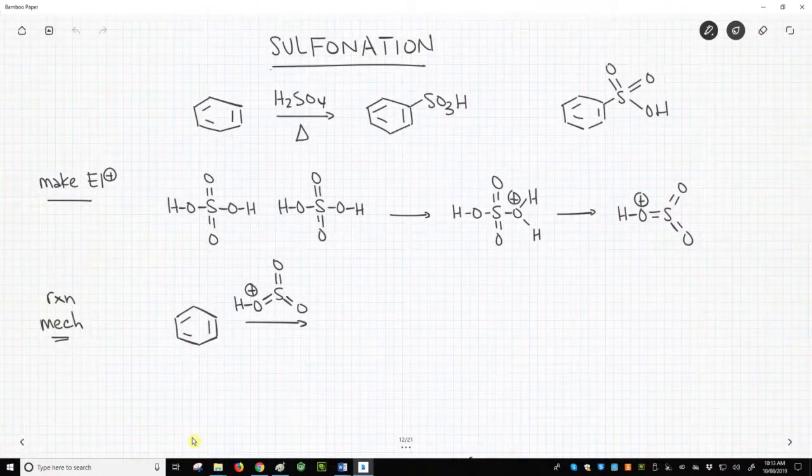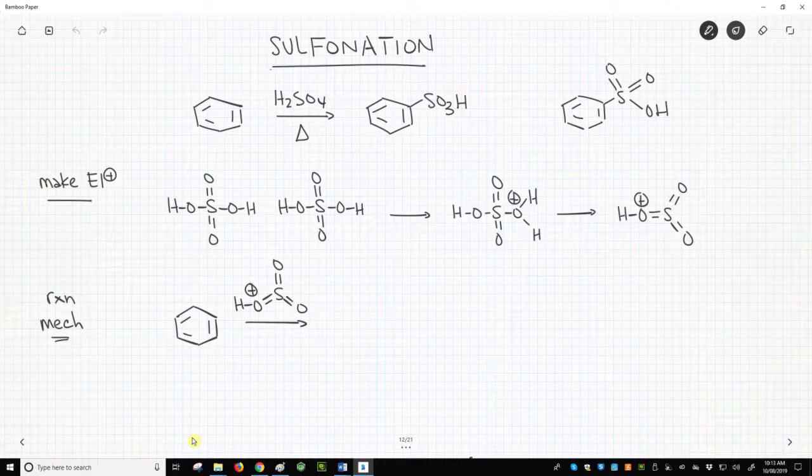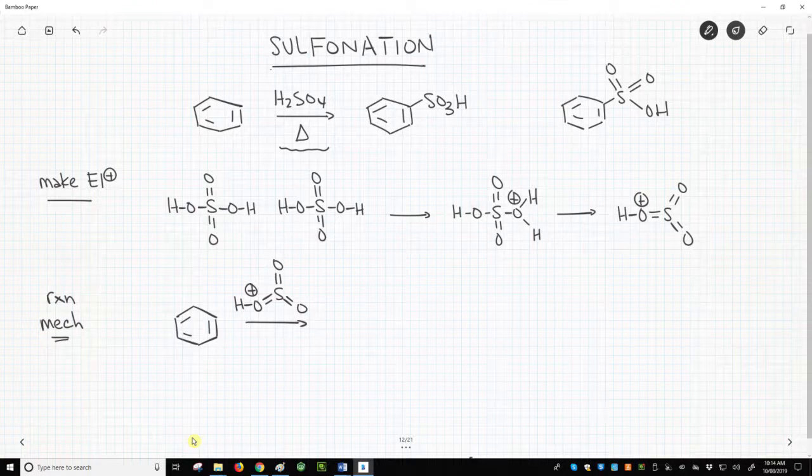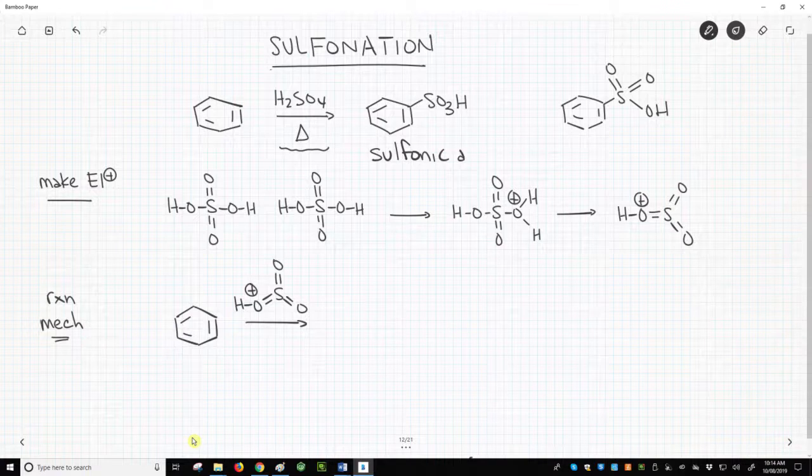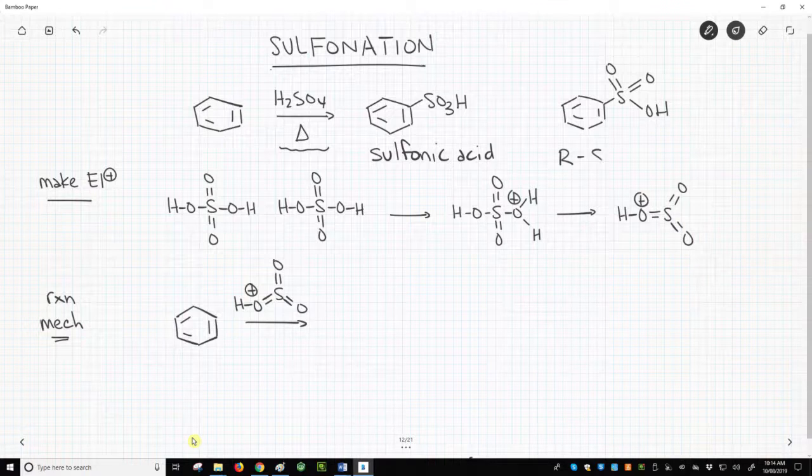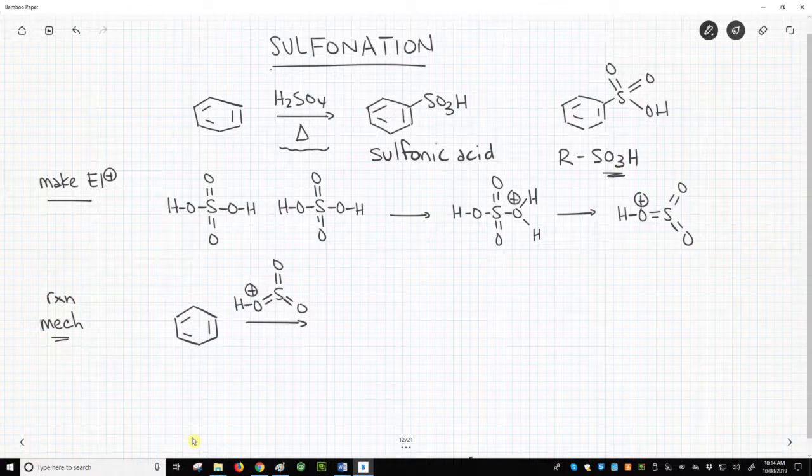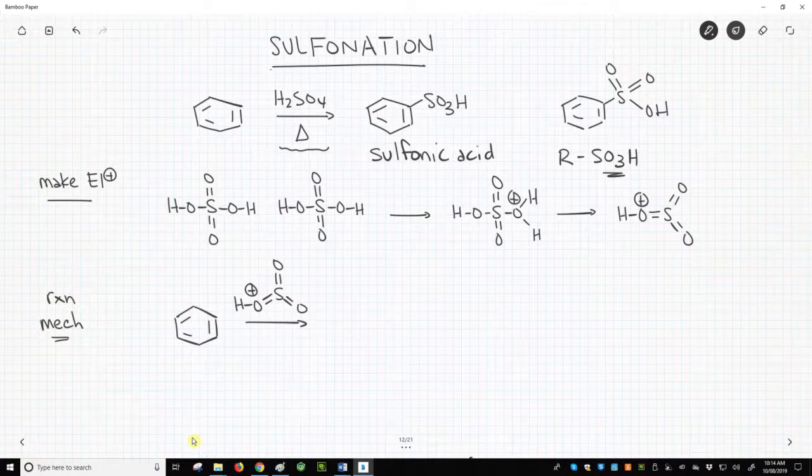Here is our overall reaction at the top of the screen. The ring reacts with sulfuric acid and heat to create a functional group called a sulfonic acid, which is an RSO3H group. To the far right is a more complete line-angle structure of the sulfonic acid.